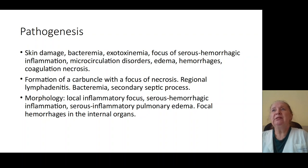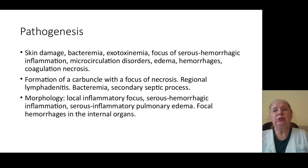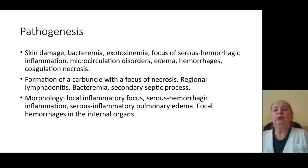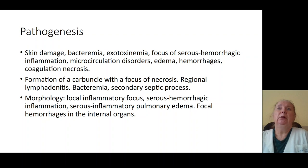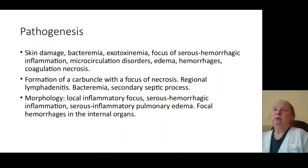Bacteria penetrate with phagocytes to the lung and brain, causing formation of secondary or metastatic foci of infection, pulmonary forms, inflammation of the lung, serosanguineous inflammation, inflammation of the brain, disturbance of microcirculation, edema, hemorrhage, and formation of coagulation necrosis leading to sepsis and septic shock.